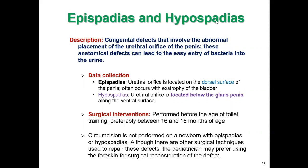Epispadias and hypospadias are congenital defects that involve the abnormal placement of the urethral orifice of the penis. This anatomical defect can lead to easy entry of bacteria into the urethra. There are two key words for alteration of urethral pathway: epispadias and hypospadias. Epispadias means the urethral orifice is located on the dorsal surface of the penis, and often occurs with extrophy of the bladder.